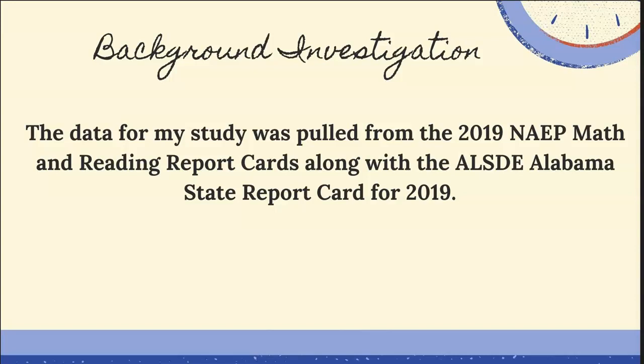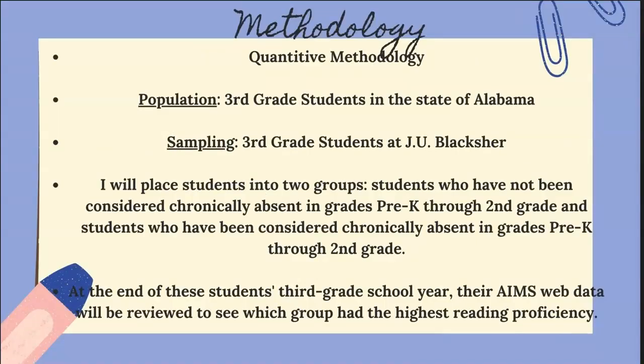The data from this study was pulled from the 2019 NAEP math and reading report cards, along with the Alabama State Department report card for 2019. The methodology of the study is a quantitative methodology. The population of the study was third grade students in the state of Alabama, and the sampling of the study was third grade students at J.U. Blackshear.